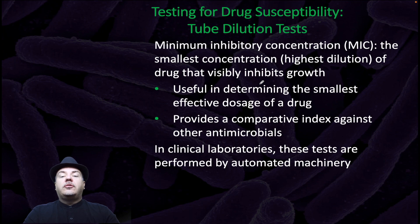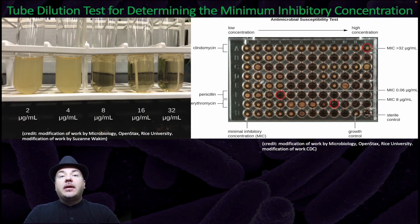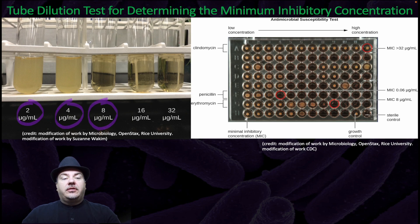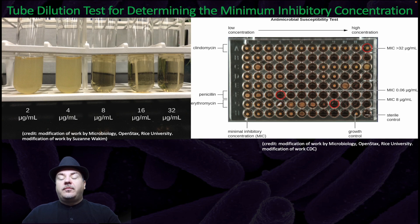Another way of testing drug susceptibility is tube dilution tests. The minimum inhibitory concentration, or MIC, is the smallest concentration — or highest dilution — of a drug that visibly inhibits growth. This is useful in determining the smallest effective dose of a drug and provides a comparative index against other antimicrobials. In clinical laboratories, these tests are performed by automated machinery. You grow bacteria in a liquid medium with different concentrations of antibiotics and see at which concentration bacterial growth is prevented. This can also be done on a plate with several different antibiotics simultaneously. For example, a particular bacteria may be more susceptible to penicillin, requiring a lower dose, versus erythromycin, which requires a much higher dose to prevent growth.